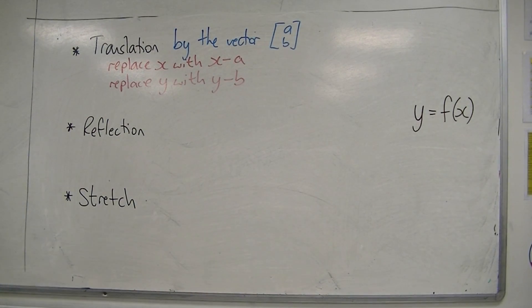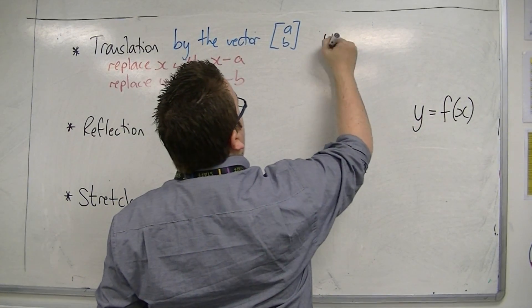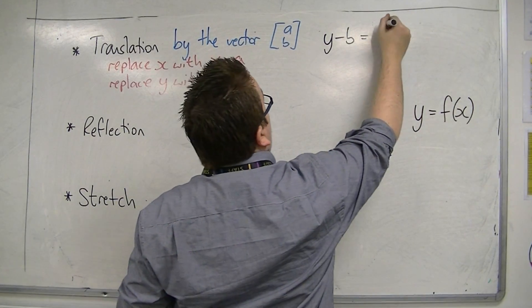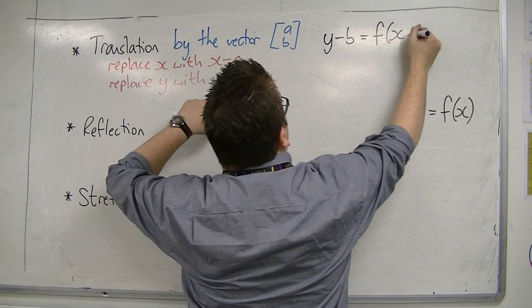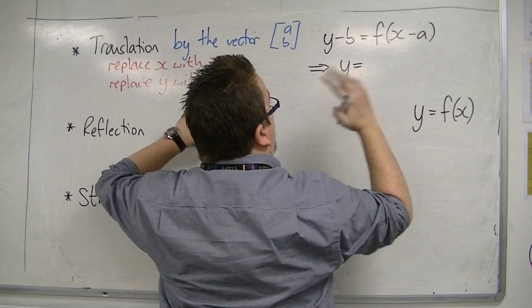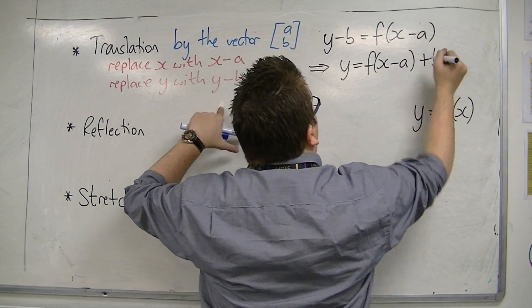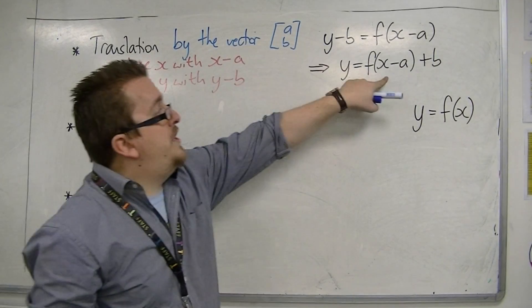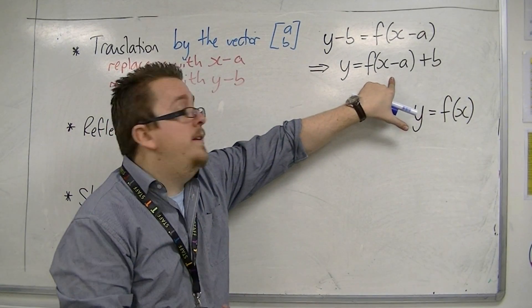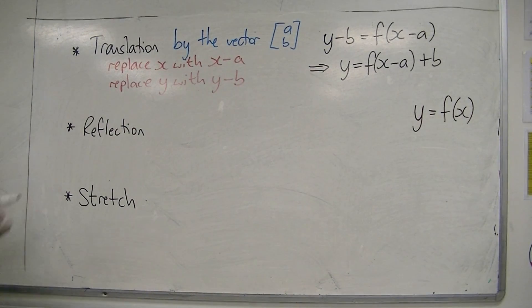So if I replace y with y minus b and I replace x with x minus a, then in function notation, if I write it as y equals, then this is f of x minus a plus b. So whatever's inside the bracket has changed sign and what is outside the bracket stays the same. So that was translation.